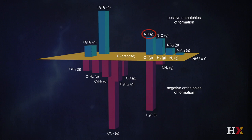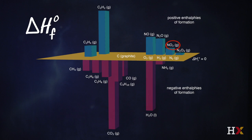For example, we can produce nitric oxide from nitrogen and oxygen and measure its enthalpy of formation — its delta H of formation — indicated with a superscript zero for standard state. Nitrogen dioxide also has a unique enthalpy of formation. Remarkably, CO2 and water have profoundly negative standard enthalpies of formation, and because they exist at the lowest thermodynamic energy level, they are always the products of hydrocarbon combustion reactions.